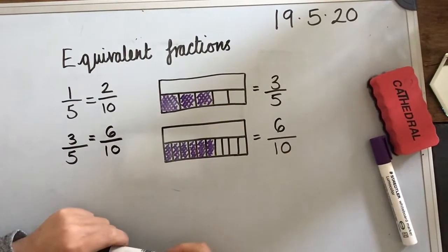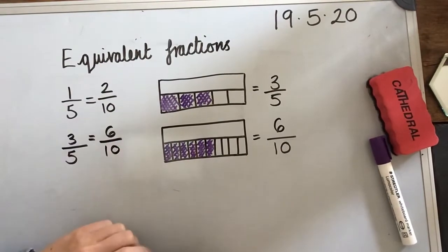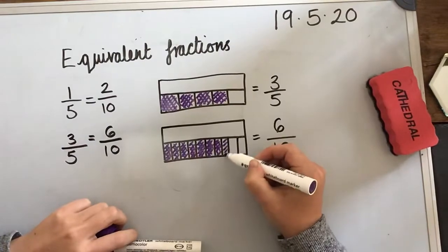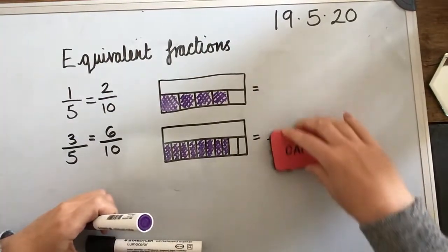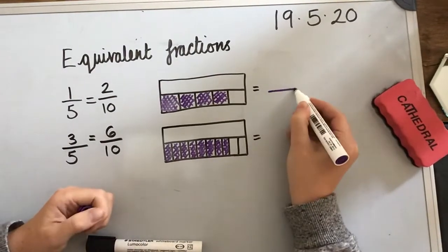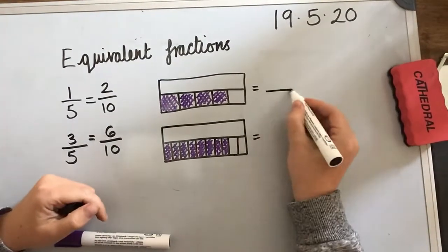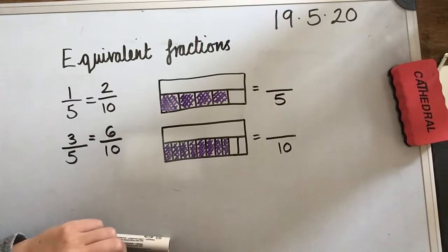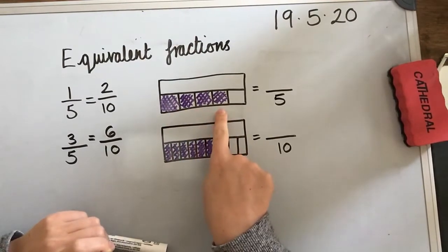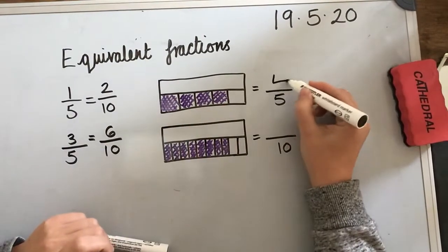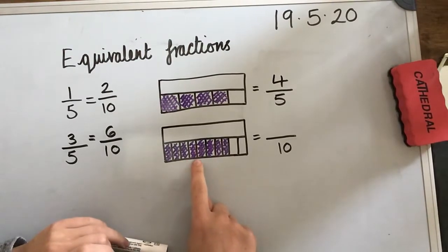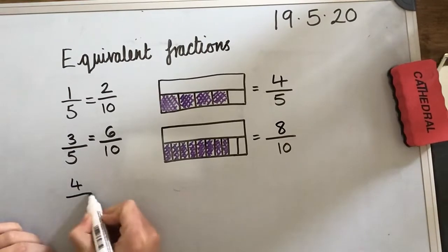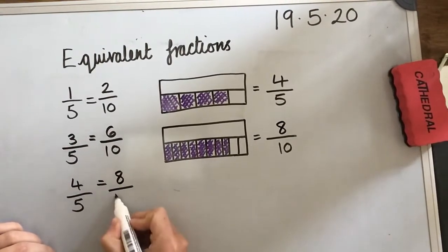To finish off, I'm going to see if you can work out one more equivalent fraction. Three, two, one, pause. How did you get on? Now let's colour in this one — and this one. I've now made them equivalent. This time, instead of three fifths, I've coloured in an extra one. So we've got four fifths, which is equivalent to one, two, three, four, five, six, seven, eight tenths. So, four fifths is equivalent to eight tenths.